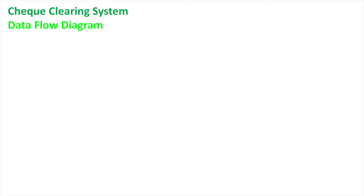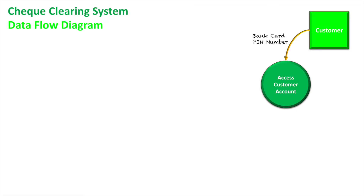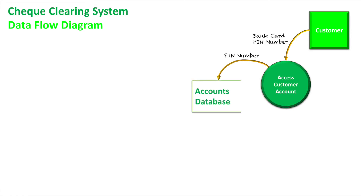Now let's look at this in the form of a data flow diagram. The customer first needs to prove they're a customer of the bank — they take their bank card to the bank, enter their PIN number, and potentially show their driver's license to access their account. Once their PIN is entered, it needs to get authenticated through the accounts database, and once confirmed that this person has an account with the bank, we can create them a checkbook.